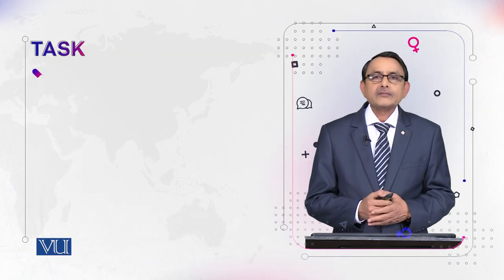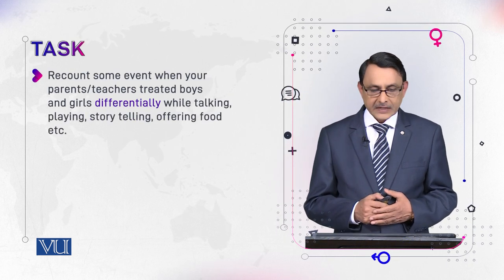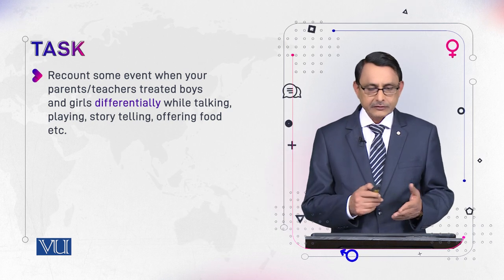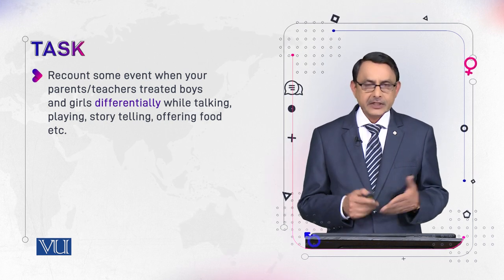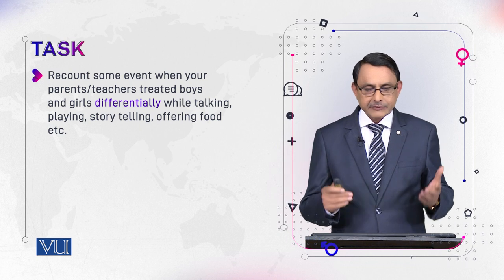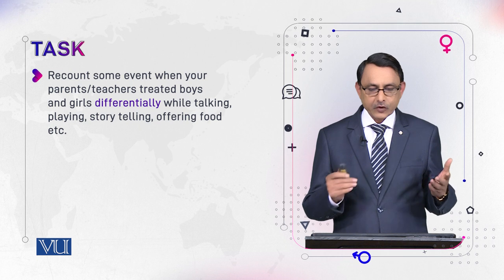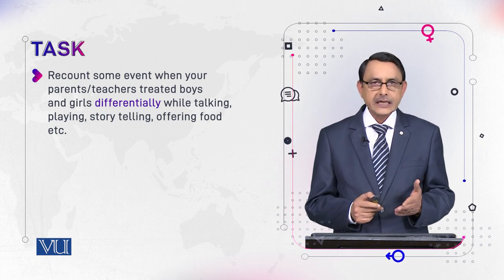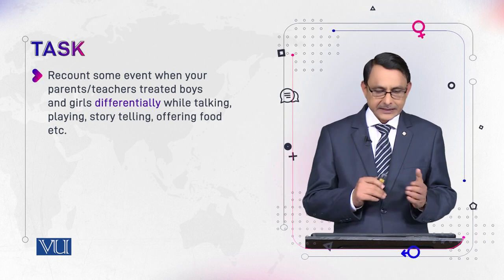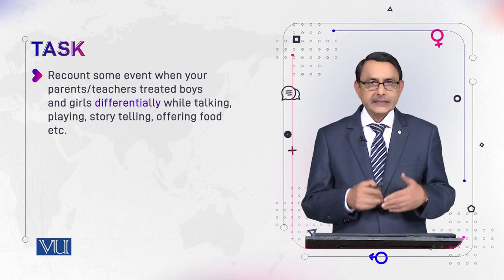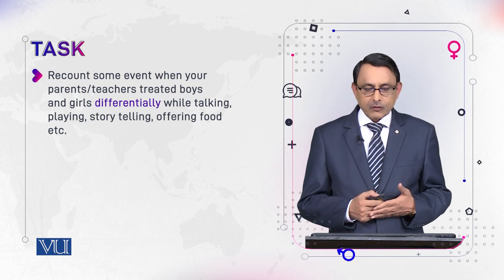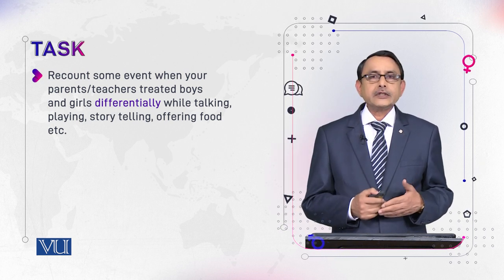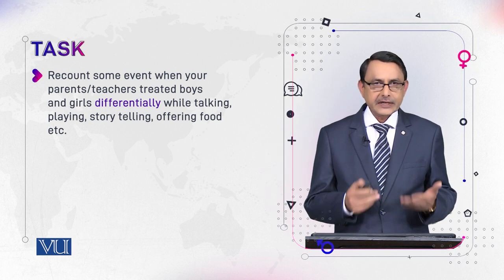This process needs some reflection on your part as well, and that would be possible when you do this task: recount — narrate in the form of a story — some event when your parents or teachers treated boys and girls differentially, meaning taking boys as different from girls while they talked with you, suggested plays, games, told stories, or offered food. This would help you understand how society builds our natural gender from infancy to puberty.